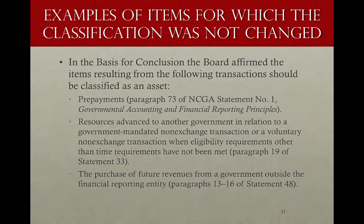I'm not going to go through every item dealt with in Statement 65 — those are covered fully in the appendix — but it's worth mentioning items reported as assets and liabilities now that will continue to be reported that way. For instance, prepayments like prepaid rent or prepaid insurance are reported as assets and should continue to be. Resources advanced to another government as part of an intergovernmental grant, where eligibility requirements other than time have been met, will also continue to be reported as assets.